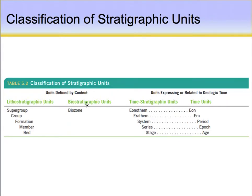For the biostratigraphic units, which are based on fossils, the basic unit is the biozone. A biozone could be a fossil assemblage — like a series of graptolites, brachiopods, or trilobites all living together in the same period of time — and we can use that as a biostratigraphic marker. For expressing units of time, we look at the time stratigraphic units. Terms like eonothem, system, and series are old terms from the 1800s that we don't really use anymore. When looking at time units, we really use the eon, the era, the period, the epoch, and the age.